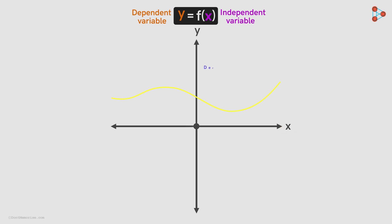The derivative of a function at a particular value of x tells us the rate of change of y with respect to x at that particular value of x. That is, how fast or slow the value of y changes with respect to x.